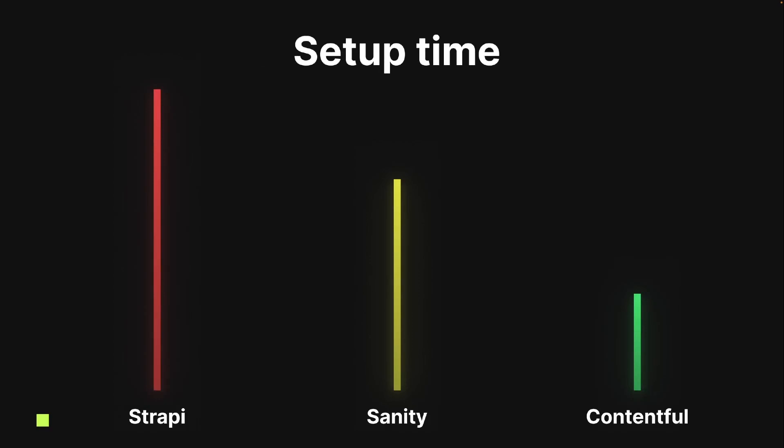In terms of setup time, Strapi takes the longest because you have to set up your own server — though if you already have one, the quick start template doesn't take too much time. For Sanity, you need to get the interface together; they have lots of examples for specific frameworks. I was using Next.js so I used their Next.js blog post to get started, and they also support Gatsby and Create React App. I had to learn GROQ since I had no prior knowledge of it. Contentful took only about 20 minutes total to set up, compared to around an hour and 20 minutes for Sanity and about three hours for Strapi.